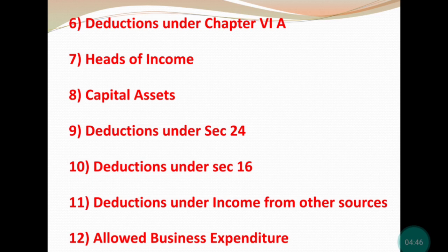Next short note is deduction under income from other sources — इसमें Section 57 या 58 cover होता है। Deductible points जैसे lottery, royalty — उनमें कौन-कौन से expenses हैं, वो सारे details यहाँ mention करने पड़ेंगी।